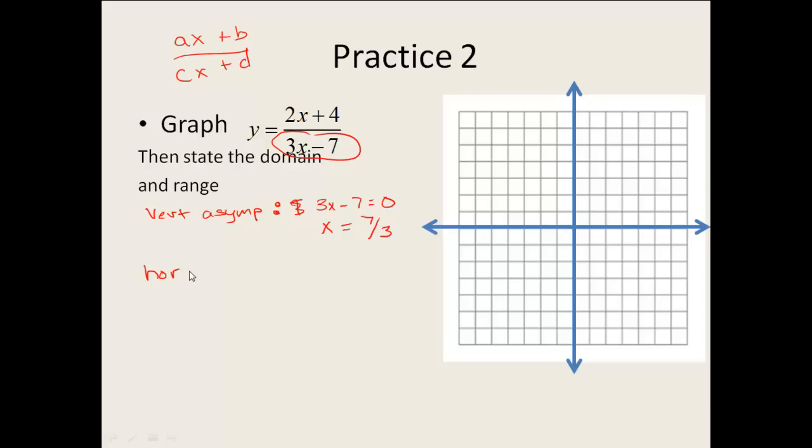My horizontal asymptote, it tells me that I have to take A divided by C. Now remember, A and C are the coefficients of your variables. A is the one in the numerator, C is in the denominator. So my coefficients are 2 and 3. My horizontal asymptote, then, is Y is equal to 2 thirds. Notice you don't keep the X's. It's only the coefficients that go up there.